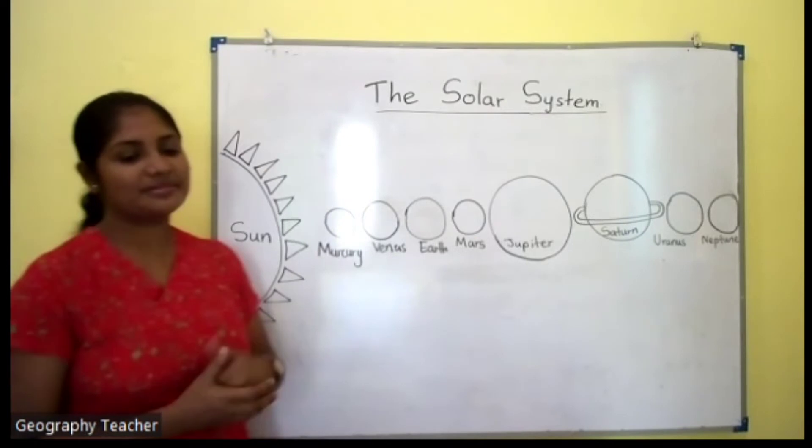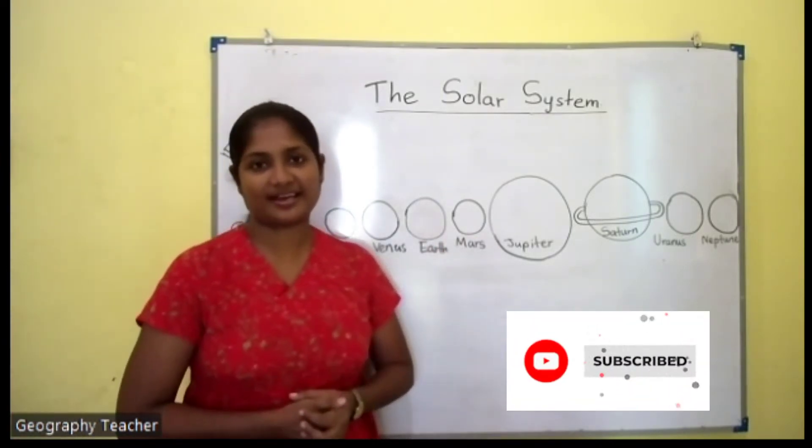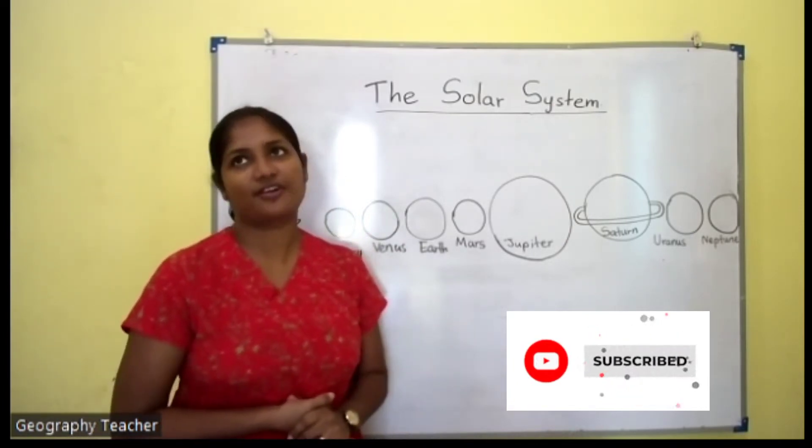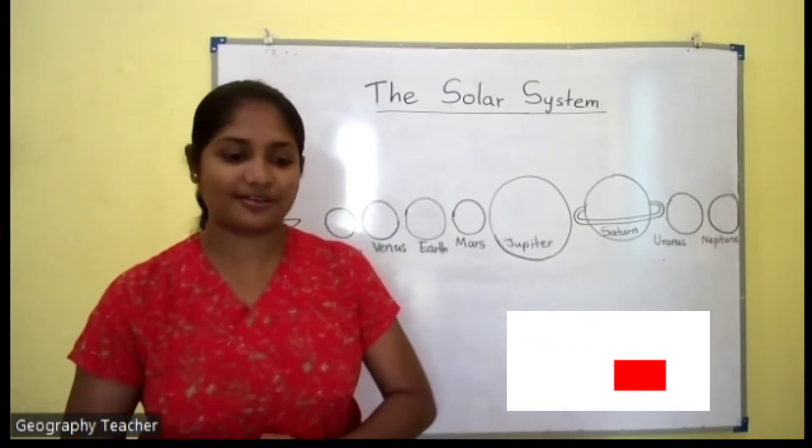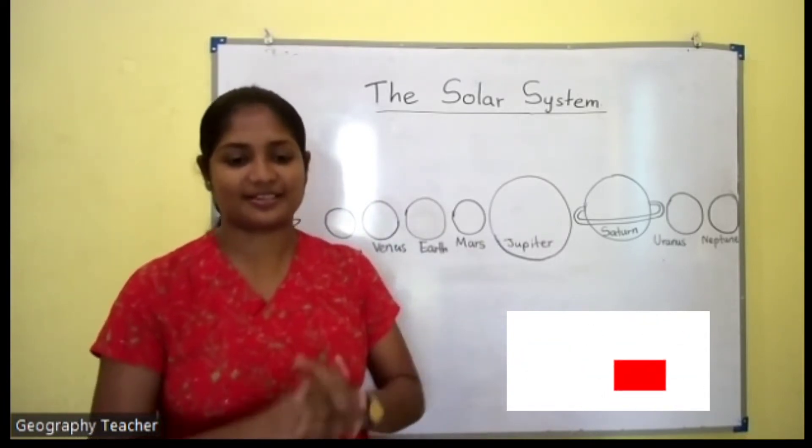A solar system is a system which consists of stars, planets, natural satellites, dwarf planets, asteroids, and different types of celestial bodies.